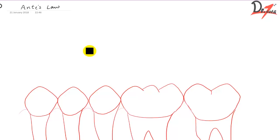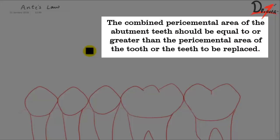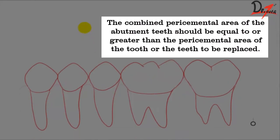So let's see what did she say. The Auntie's Law or Ante's Law states that the combined pericemental area of the abutment teeth should be equal or greater to the pericemental area of the tooth or the teeth to be replaced.